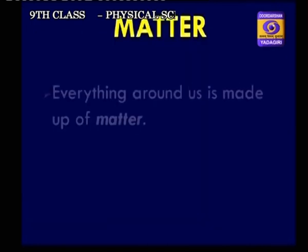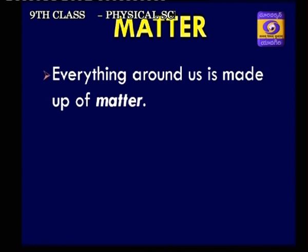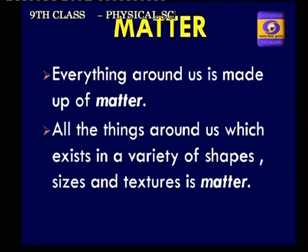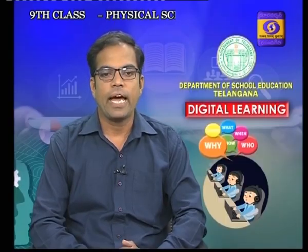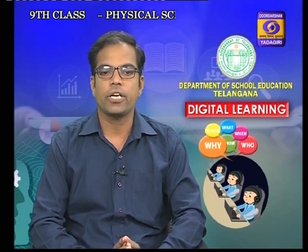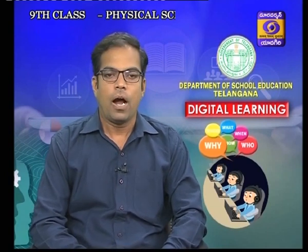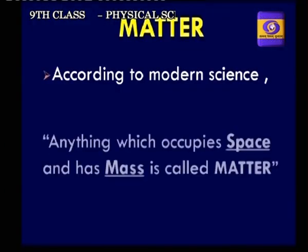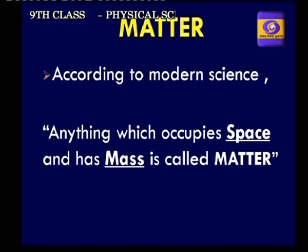Let us discuss matter. Everything around us is made up of matter. All the things around us which exist in a variety of shapes, sizes and texture is matter — chalk piece, table, blackboard, chair, whatever it may be. According to modern science, anything which occupies space and has mass is called matter.